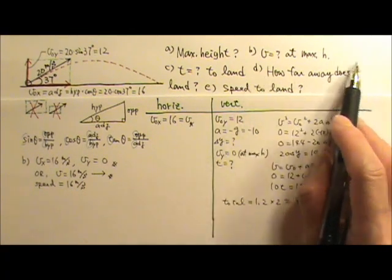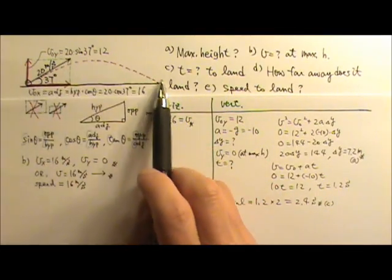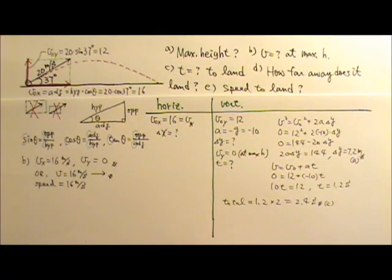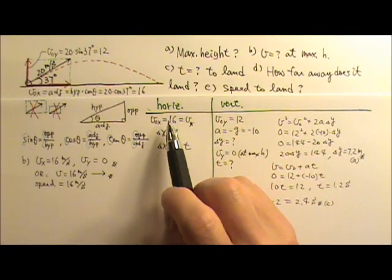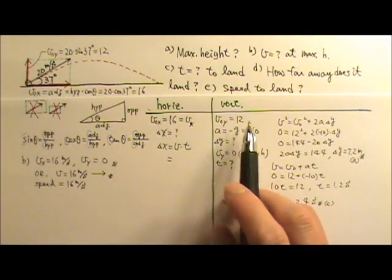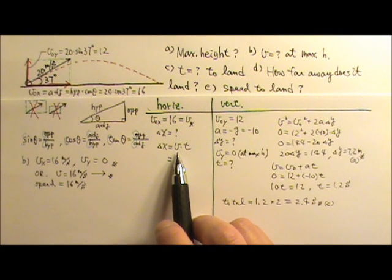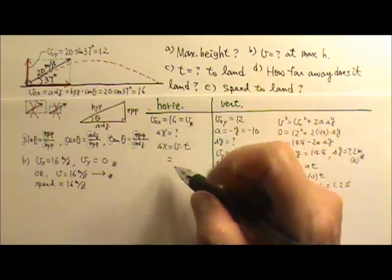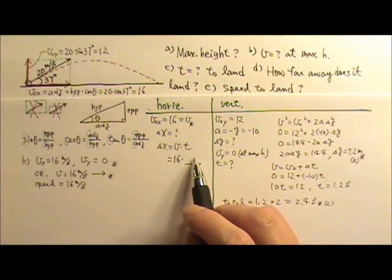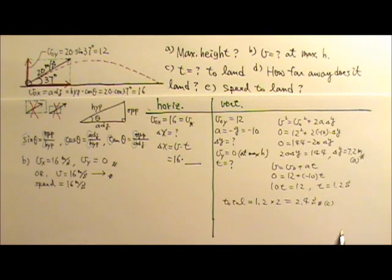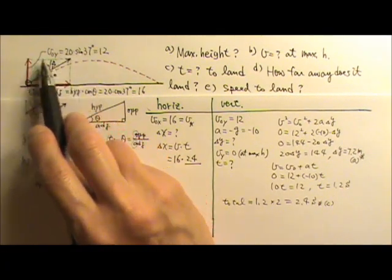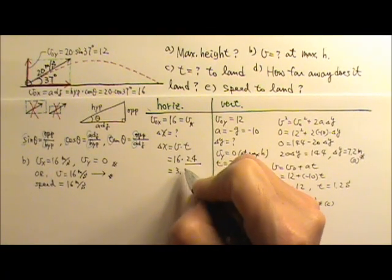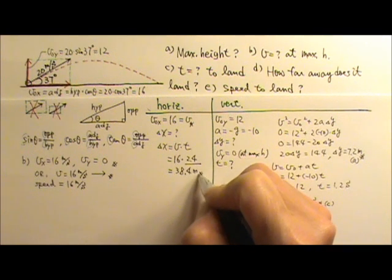For Part D, we want how far away the ball lands — that means we want delta X. The equation for the horizontal side is delta X = V × T. Of the three velocities — 20, 16, and 12 — we use the horizontal velocity, 16. The time comes from the vertical side since time is shared by both; the total time to land is 2.4 seconds. Using 1.2 seconds would only give you the delta X to the midpoint at maximum height. So delta X = 16 × 2.4 = 38.4 meters. That's the answer for Part D.